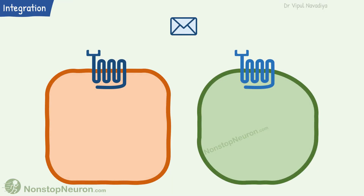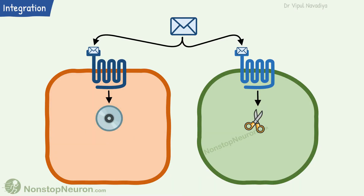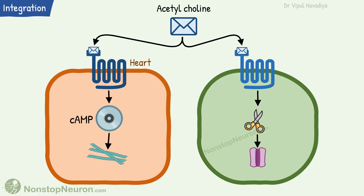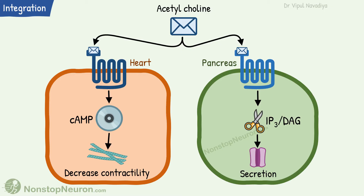On the other hand, the second messenger system also allows diversifying responses from the same first messenger. The same first messenger may activate a different intracellular signaling pathway in different cells and produce different responses. For example, acetylcholine follows the cAMP pathway in heart muscle cells and decreases contractility, but in pancreatic acinar cells, it activates the IP3-DAG pathway and induces secretion of digestive juice. Thus, the same messenger can produce a different response in different cells.